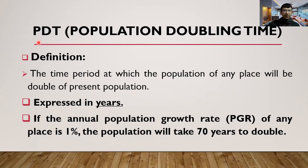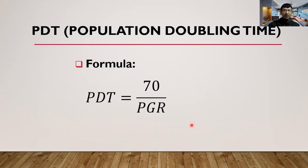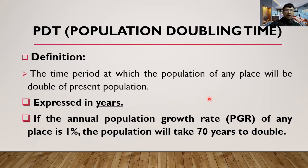Population doubling time is expressed in years. A frequently asked question is: if the annual population growth rate of any place is 1%, in how many years will it be double? Using the formula: 70 / 1 = 70 years. If the annual PGR is 2%, then 70 / 2 = 35 years. That is how you calculate population doubling time.